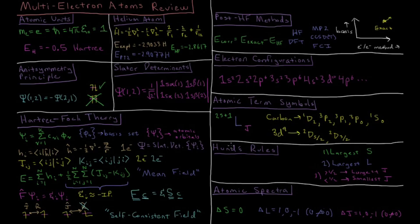Once we have the term symbols, Hund's rules tell us the lowest energy term symbol for a given electron configuration and what the ground state will be. They rank all other states in terms of values of spin, orbital angular momentum, and total angular momentum.